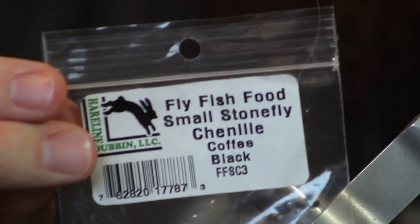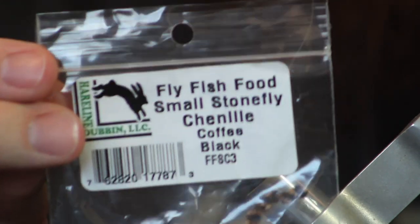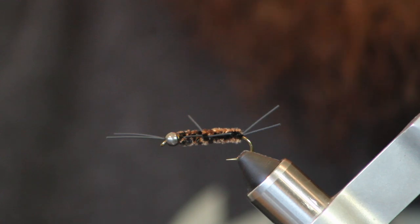And then we're going to use chenille for the body. This is a small stonefly chenille in a coffee black color, which I like. It gives a nice variegation to it.